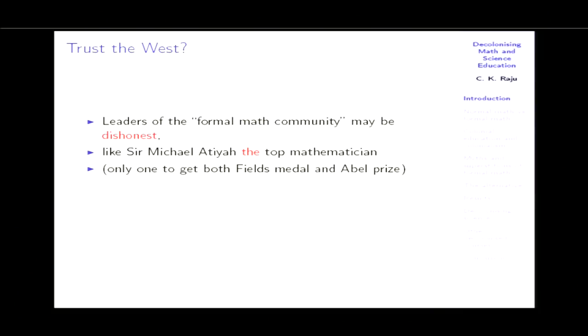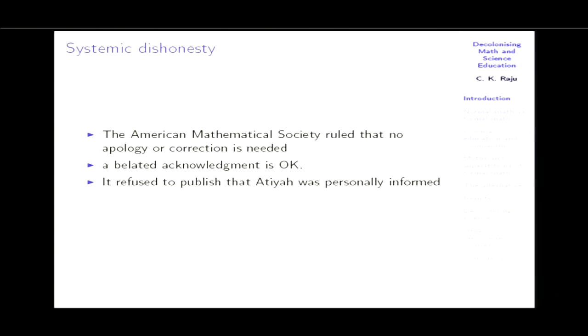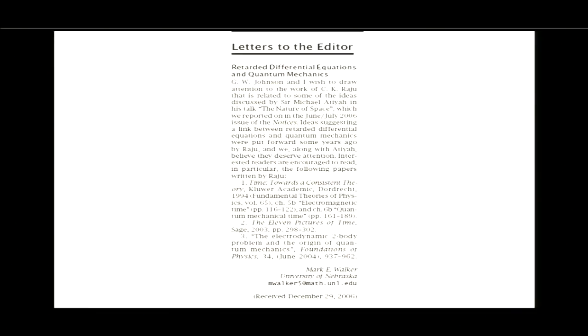The second time he did it was after he was personally informed. The American Mathematical Society ruled that no apology or correction was needed — it was enough to acknowledge that my book existed, even though it had been published ten years prior. The AMS refused to publish that Atiyah had been personally informed, that he had made a mistake, and that he did it a second time. The ethics are applied selectively. Decolonization aims to overthrow unreasonable Western authority, especially over the local syllabus, because academics still remain colonized — they need Western certificates of approval to be trusted.